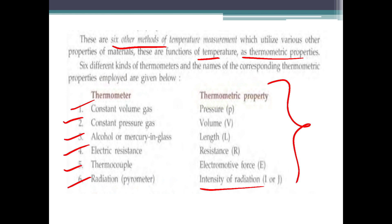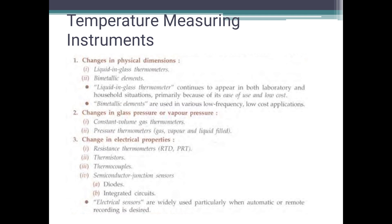There are 6 different kinds of thermometers, each called by its corresponding thermometric property. We have different temperature measuring instruments. The first classification is based on changes in physical dimensions, which includes the liquid-in-glass thermometer and bimetallic elements.